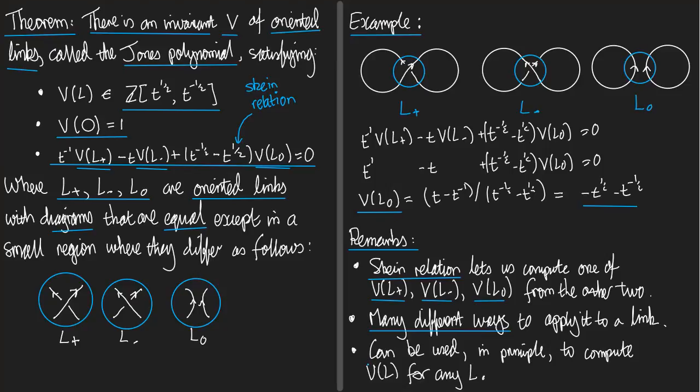And this is actually a theoretical remark, the final one. You can use the skein relation to compute V(L) for any L. So, there is a way to use the skein relation to compute anything. That's the end of the mini lecture.